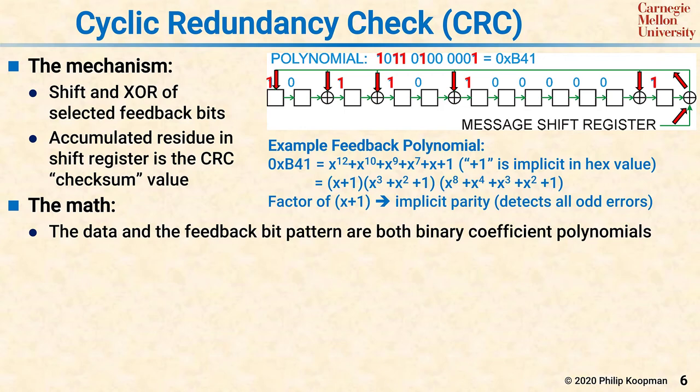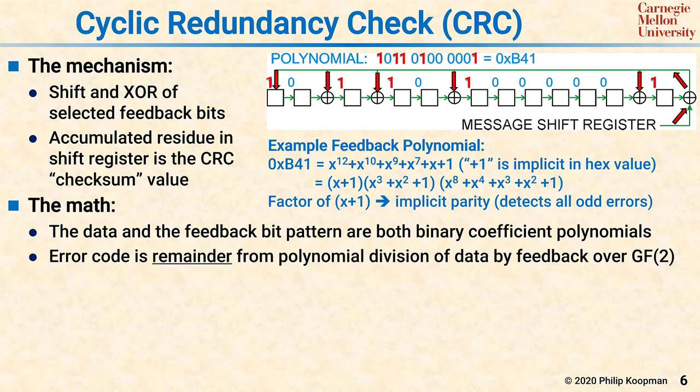Where the math comes in is that you're representing the message also as a polynomial. So if it's a 64-bit message, it's either 0 or 1 times 2 to the 64, plus 0 or 1 times 2 to the 63, and so on. If you represent both the feedback as a polynomial and the message as a polynomial, then you can think of a CRC calculation as doing a polynomial division of the message divided by the feedback, and the value in the CRC shift register at the end is the remainder of the division. The CRC calculation is doing a polynomial division over Galois field 2, which means it follows Boolean algebra rules instead of integer arithmetic laws, and the resulting remainder is the error code.